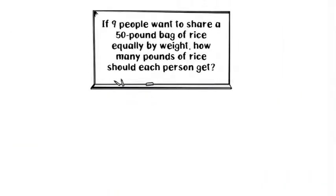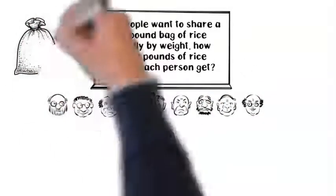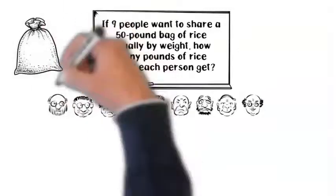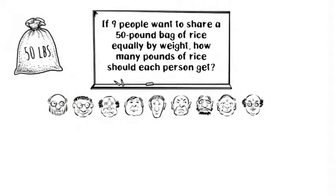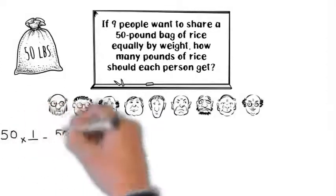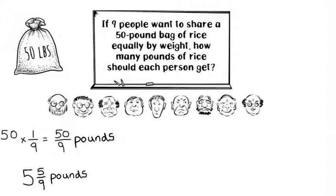Let's try this problem. If 9 people want to share a 50 pound bag of rice equally by weight, how many pounds of rice should each person get? This can be solved in two ways. First, they might partition each pound among the 9 people, so each person gets 50 times 1 ninth, which equals 50 ninths pounds. That's equal to 5 and 5 ninths pounds.